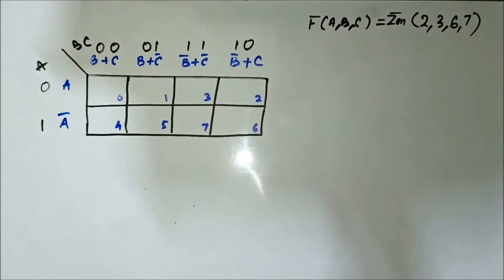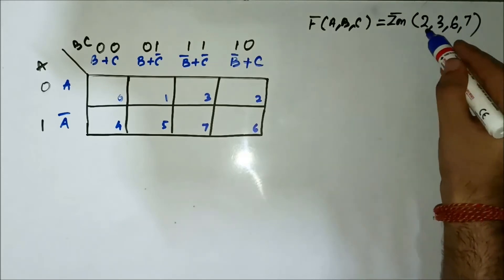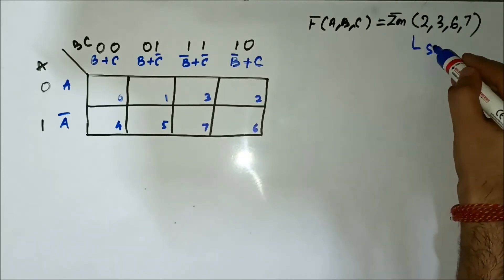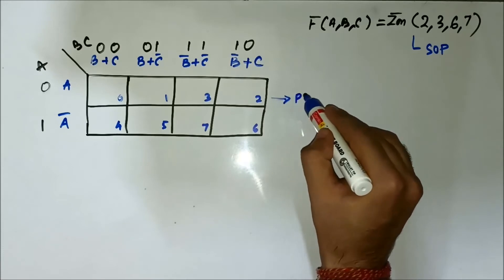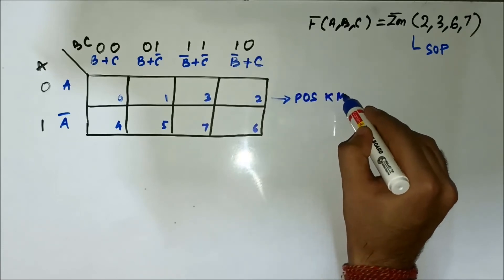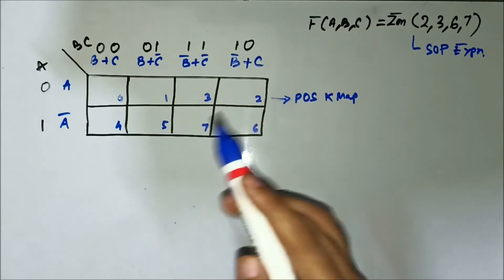We will be solving some questions directly to get used to how things work. So this is the first question — we have a Boolean expression given in terms of minterm values, which is an SOP expression, and we have to simplify it using POS K-maps.